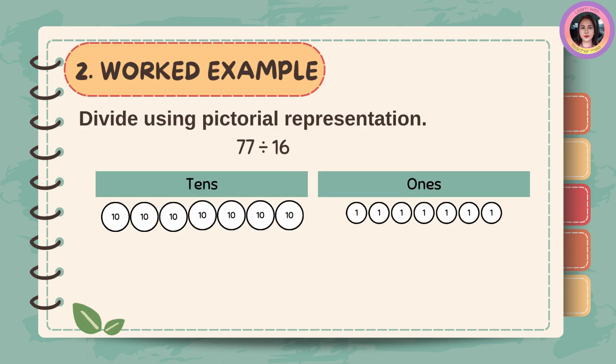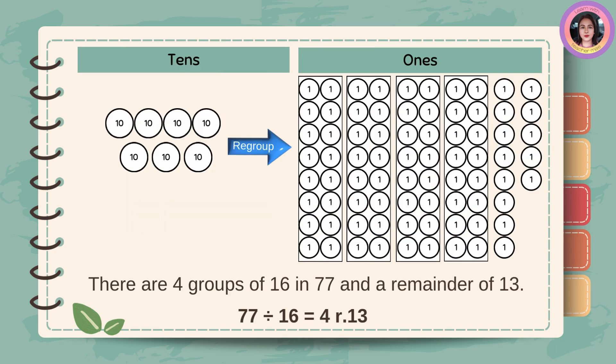Divide using pictorial representation. 77 divided by 16. In 77, there are 7 tenths and 7 ones. 7 tenths is equal to 70 ones. Then group the ones by 16.